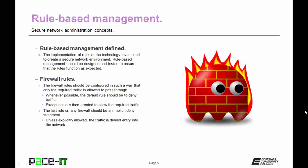Whenever possible, the default rules should be to deny traffic. Once that default rule is in place, exceptions are then created that allow the required traffic to pass through the router. The last rule on any firewall should be an implicit deny statement. That means that unless explicitly allowed, the traffic is denied entry into the network.